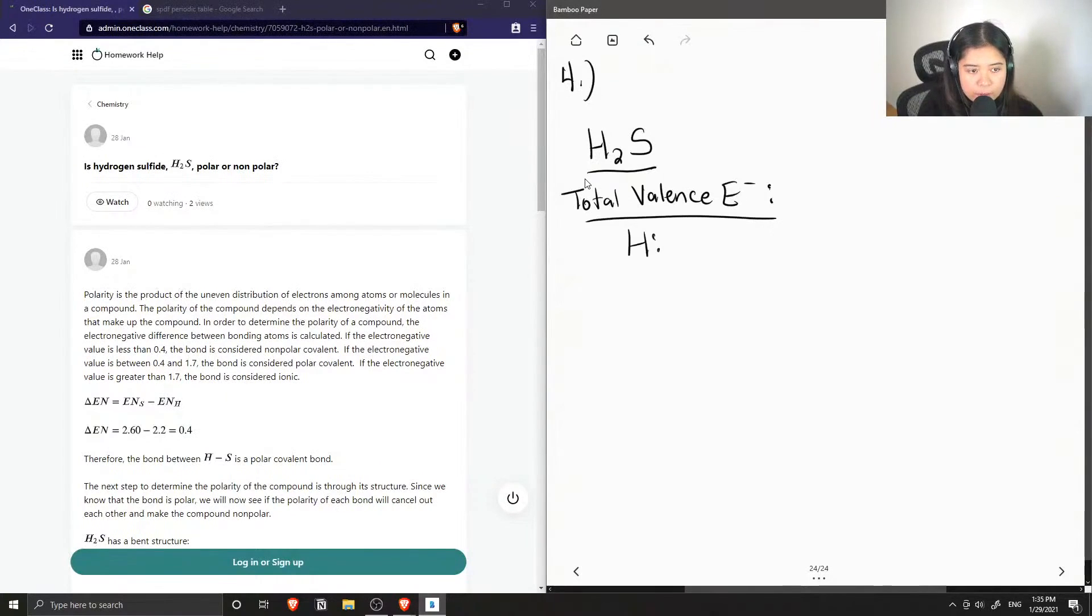Hydrogen has one valence electron and there are two hydrogen atoms so we multiply this by two. And sulfur contains six valence electrons, so in total we have eight valence electrons for this compound.